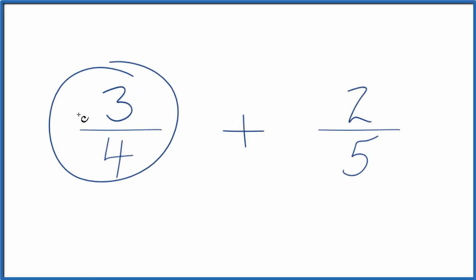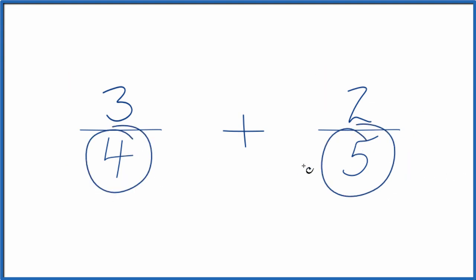Let's add the fractions 3 fourths plus 2 fifths. Here's how you do it. We need to get a common denominator. We need to have the same denominators. If we do that, then we just add the numerators and we'll have added 3 fourths plus 2 fifths.